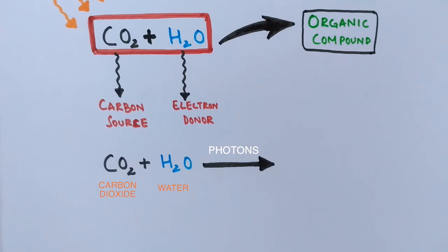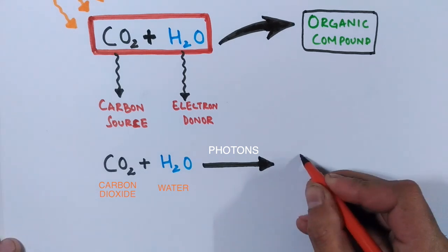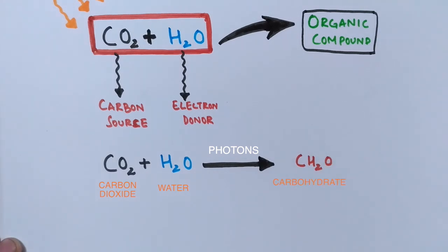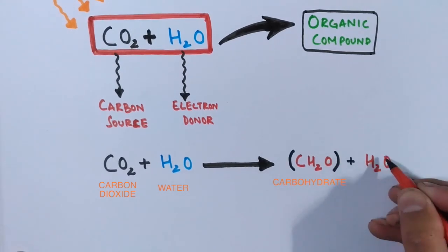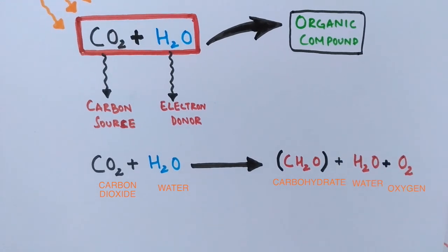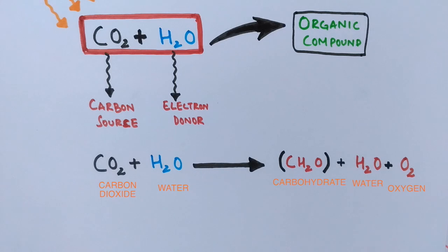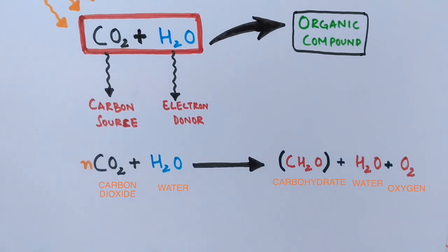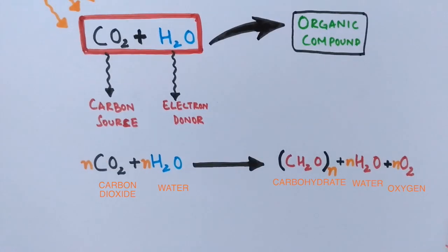From CO2 and H2O, we get CH2O (carbohydrate) plus a water molecule. The important molecule produced is oxygen, but it must be noted that oxygen is not the primary product — it is a byproduct. To balance the equation: N CO2 + N H2O gives N(CH2O) + N H2O + N O2.